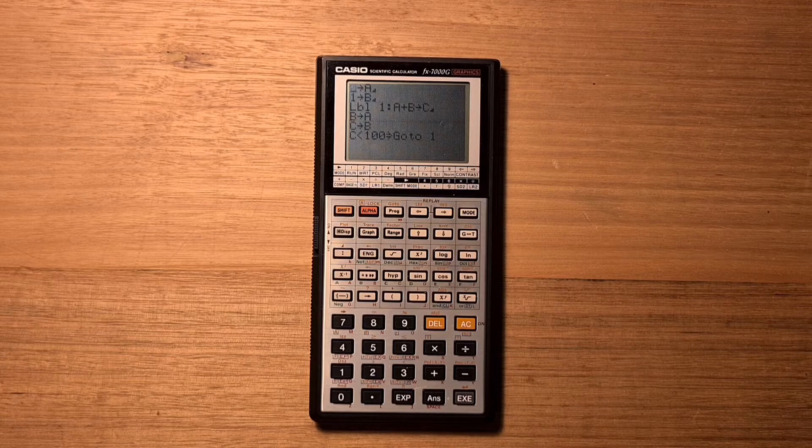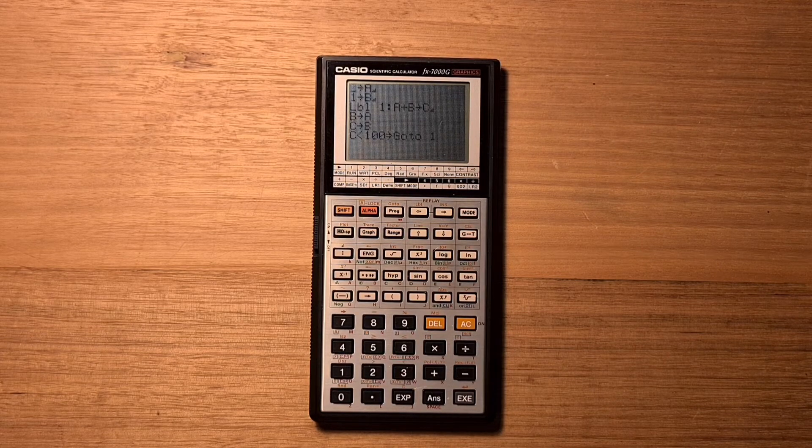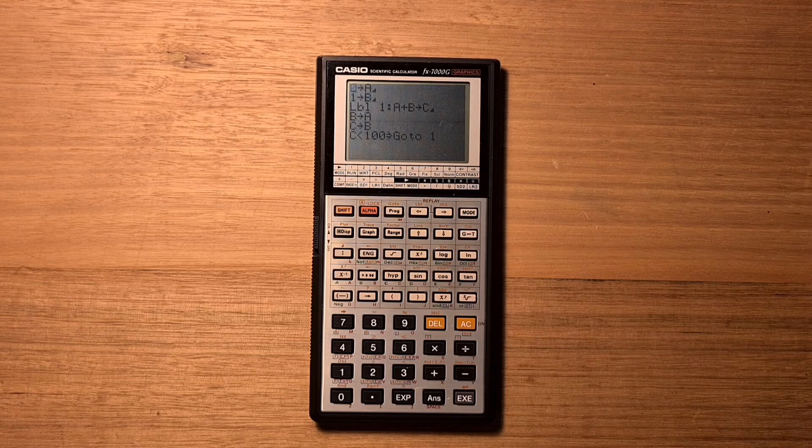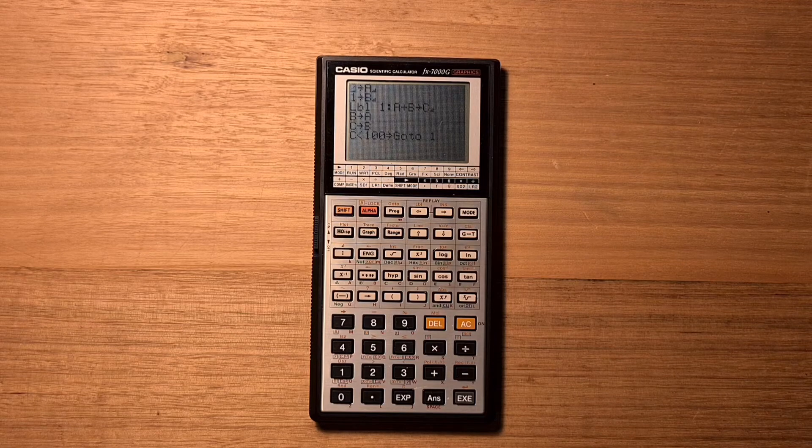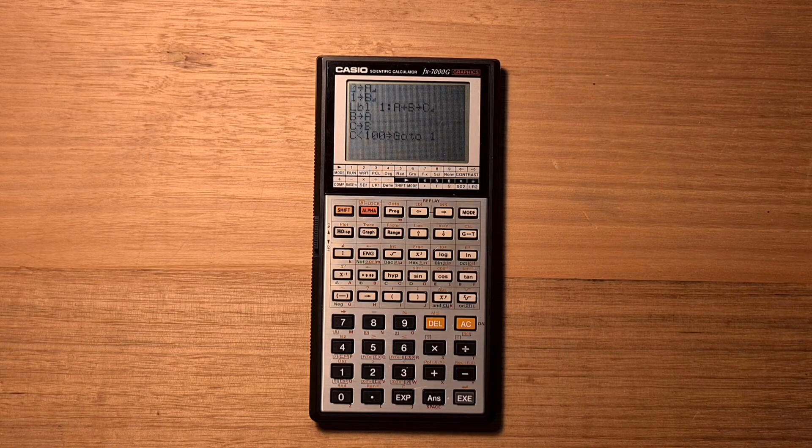The program then pulls B down into A and C into B and ends with a conditional test. So if the number just printed out was less than 100, we'll loop back to label 1 and calculate the next number in the series.